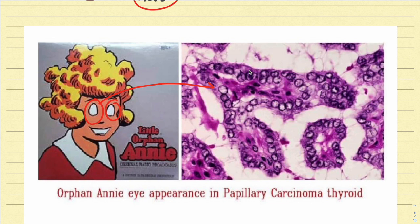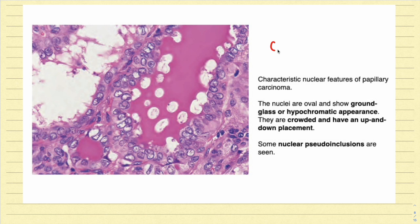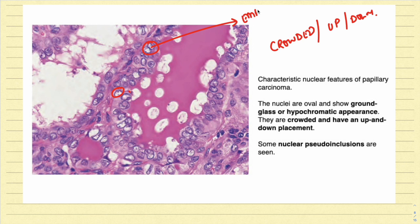You can see the empty looking eyes over here, and you can compare it with the histological diagram. Can you appreciate this classical nuclear empty looking appearance? This is a classical feature seen in papillary carcinoma of the thyroid, also called as the ground glass appearance, orphan Annie-like nucleus, or empty looking nucleus — the first important nuclear feature. The second very important nuclear feature is that the nucleus is crowded and has a characteristic up and down appearance.